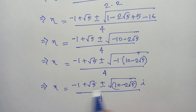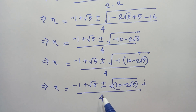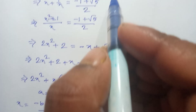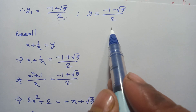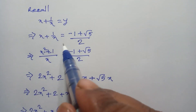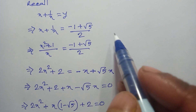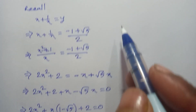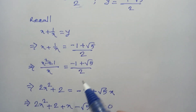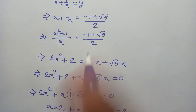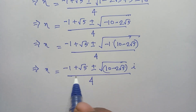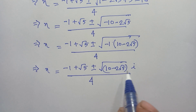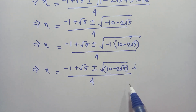We have two solutions from the plus or minus. The other solution using y₂ equals minus 1 minus root 5 over 2 can be solved the same way. So in summary, we have the solutions: x₁ equals 1, and x equals minus 1 plus root 5 plus or minus i times root of 10 minus 2 root 5, over 4. Thanks for watching, please subscribe to my channel for more interesting videos. Bye bye.